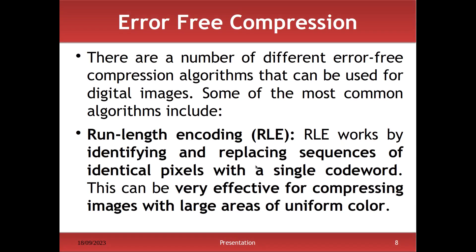There are different kinds of algorithms used in error-free compression. The first one is RLE — Run Length Encoding. In RLE, we identify and replace identical pixels with a single code word. This is very effective for compressing images with larger uniform color areas, and it is especially applicable for uniform color images.